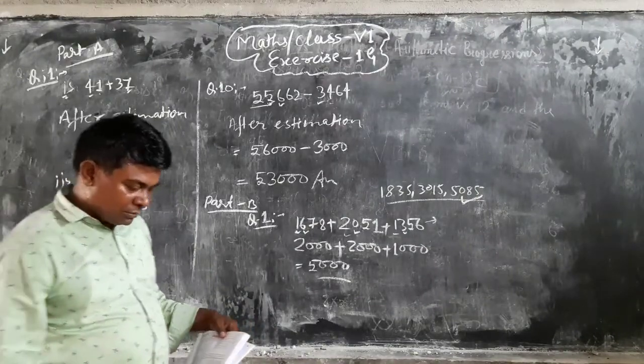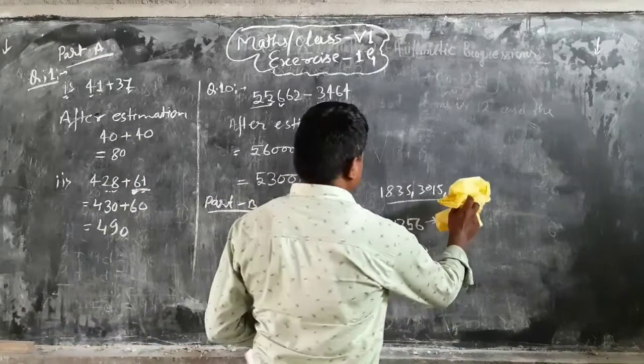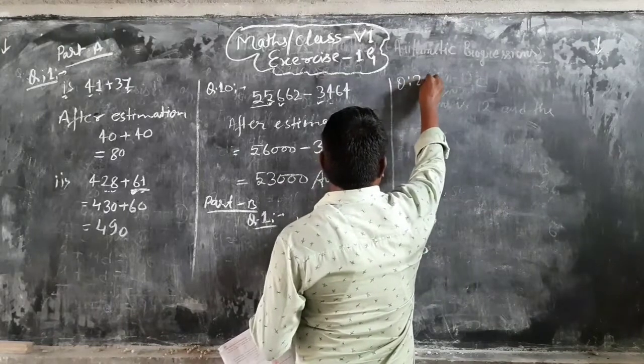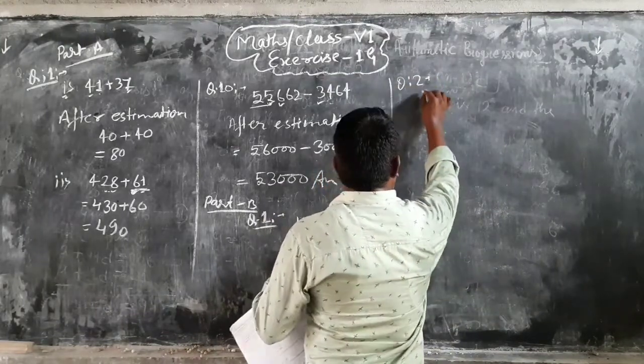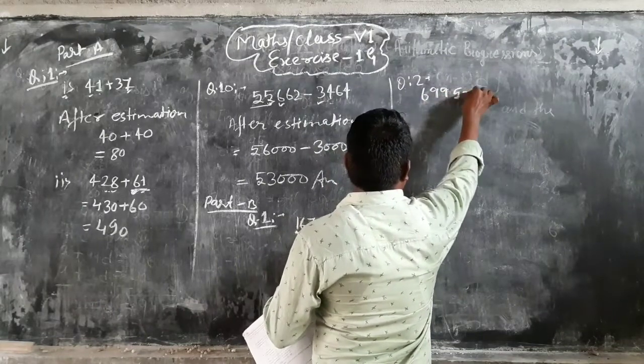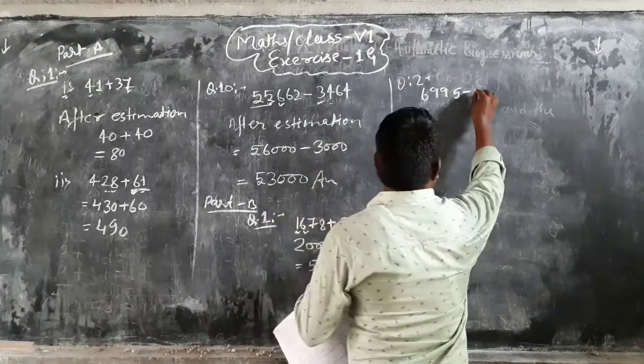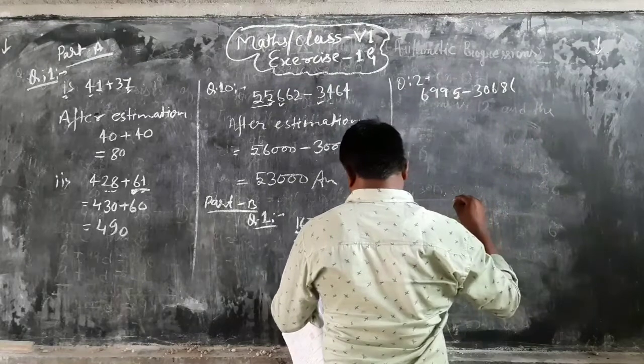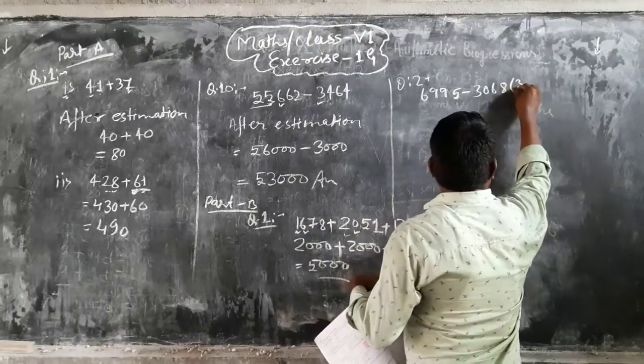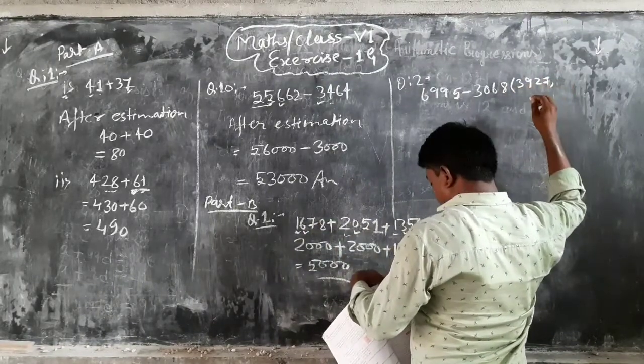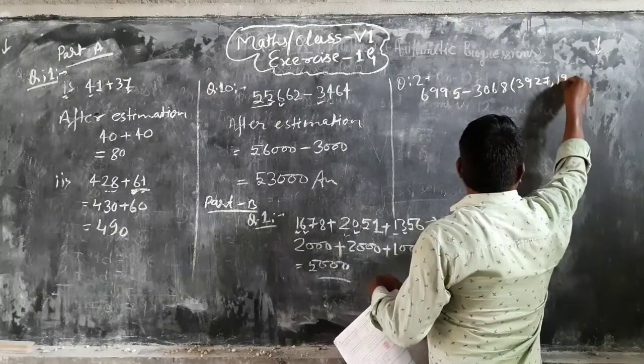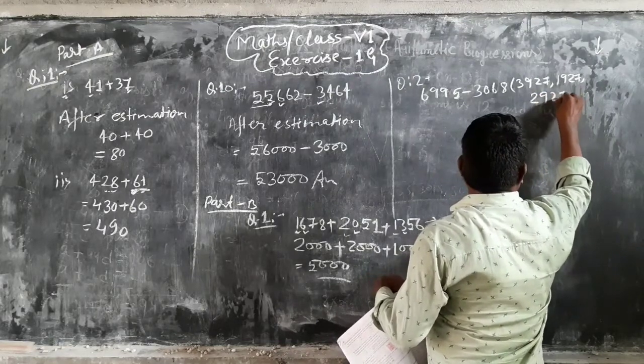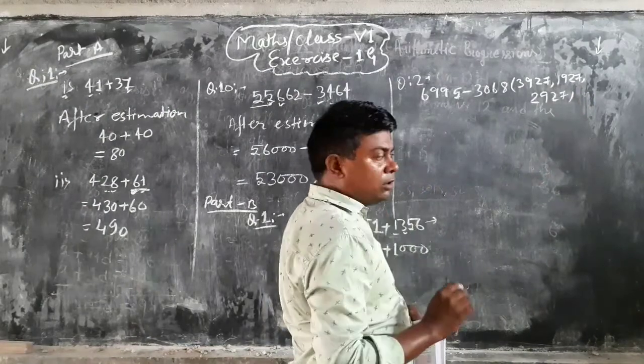Next question. Question number 2, Part E. Second question: 6,995 minus 3,068. The options are 3,927, 1,927, and 2,927.